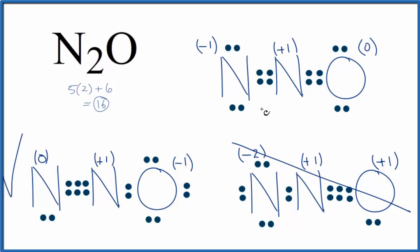Understand though, that these other structures are what we call resonance structures. They're not the major resonance structure, but the actual molecule could be an average of these structures here.